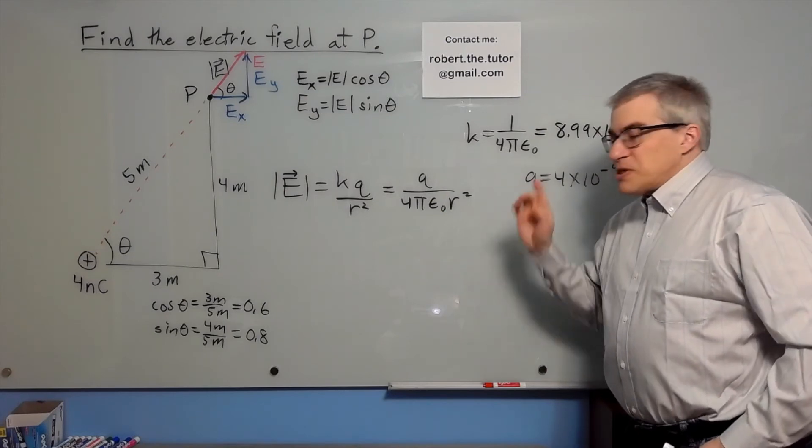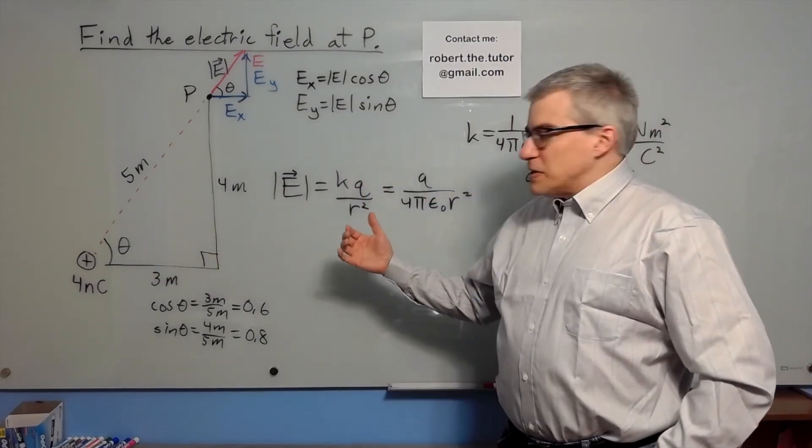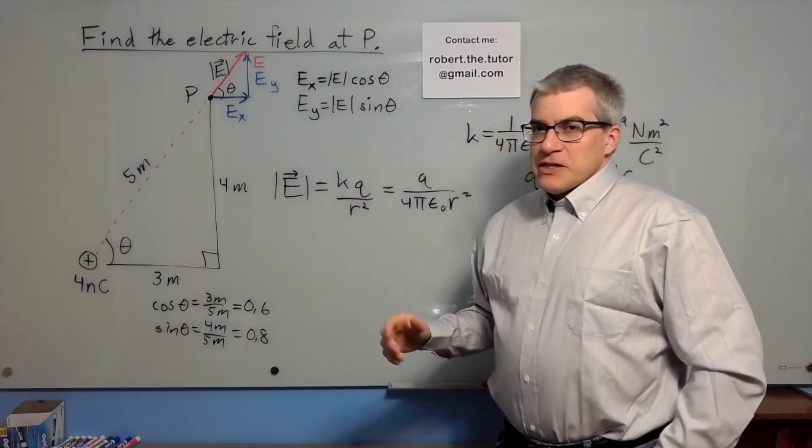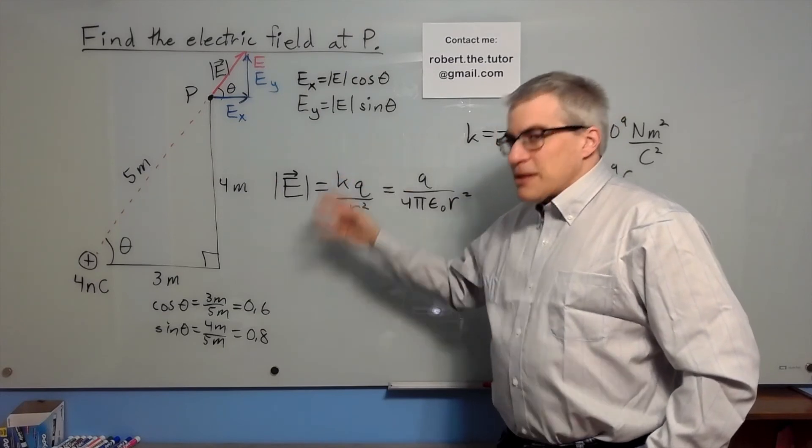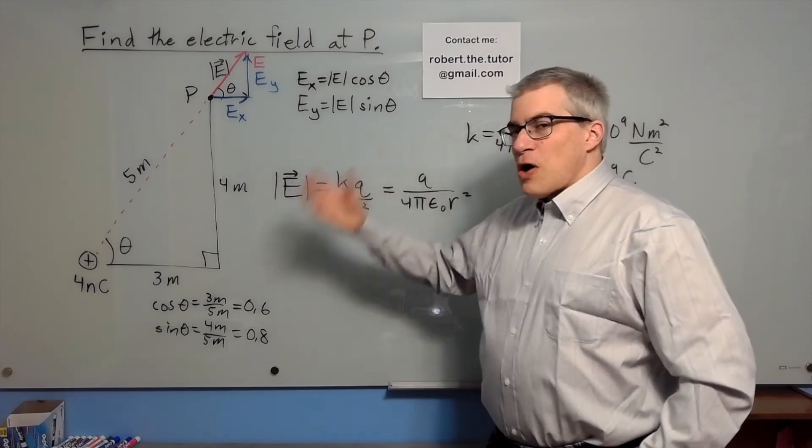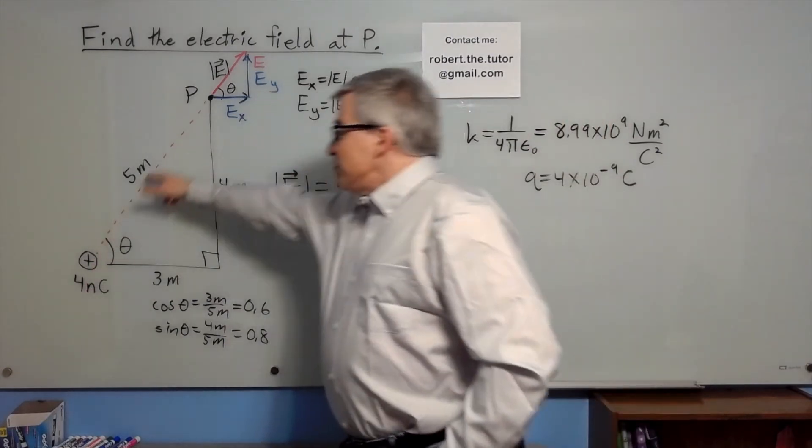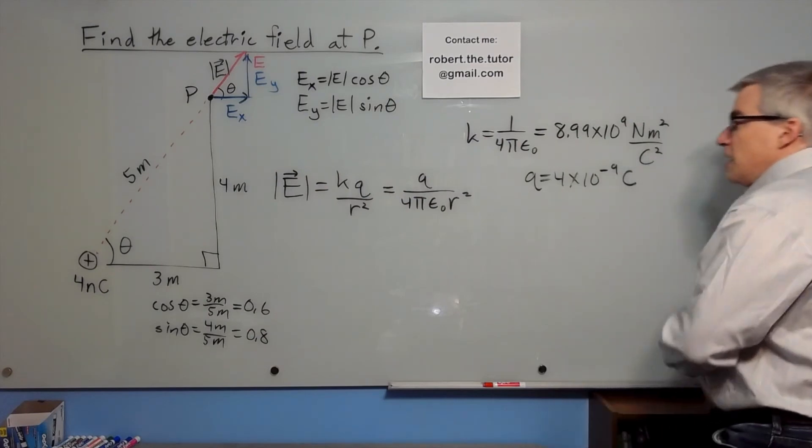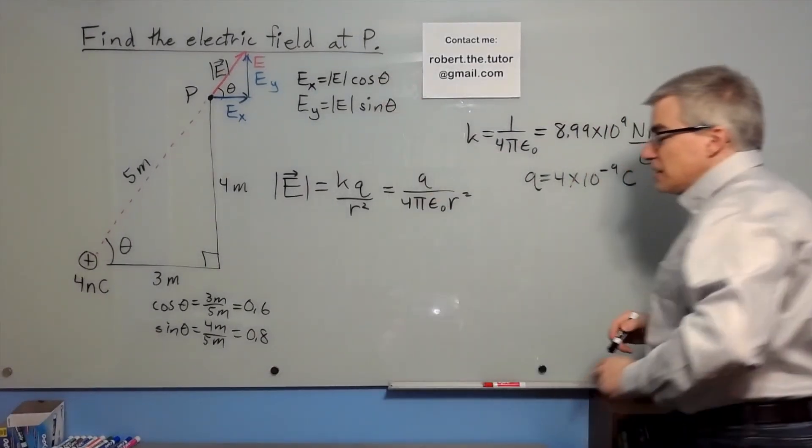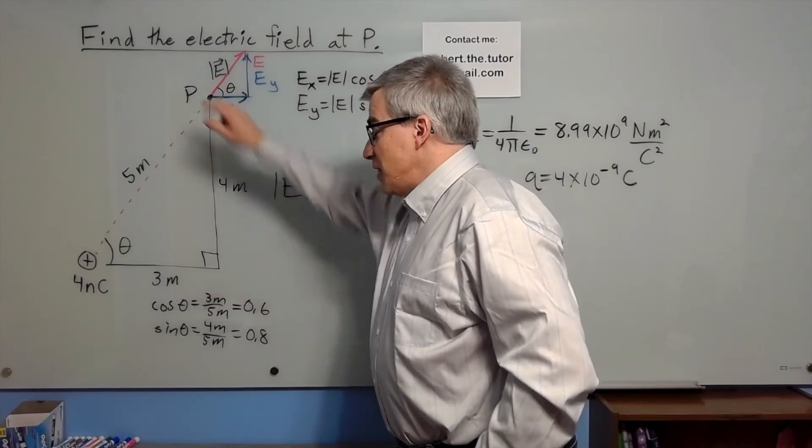Now a lot of students make mistakes here. They start putting in like 3 meters when they're trying to find electric field x and 4 meters when they're trying to find electric field y. No, no, no, no, no, no. What's going to determine the strength of the electric field is how far away you are from the charge. You are 5 meters away from the charge. That is the quantity that goes in. Then you break it up into components. If you put in 3 meters, you're going to find the electric field strength here, which is a lot closer to the charge than that is.